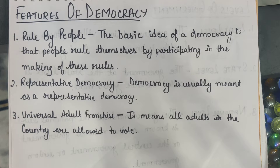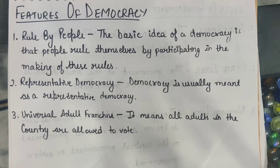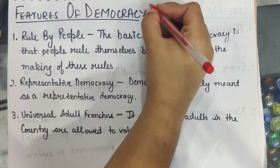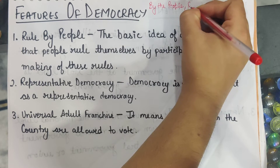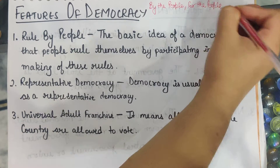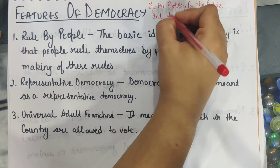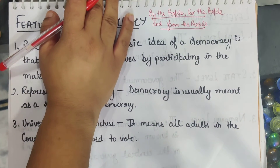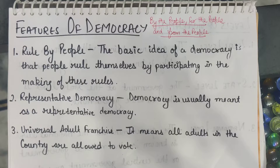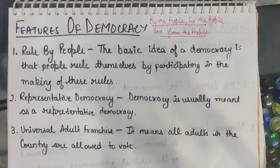The first feature says rule by people. Democracy is by the people, for the people, and from the people — which means the government is made by the people. We, the citizens of a country, elect our leaders through elections. We vote for our favorite candidate, and the party or person who gets the majority vote is chosen as our government.